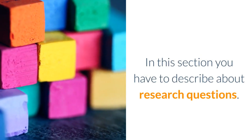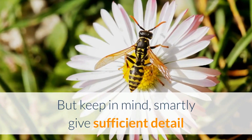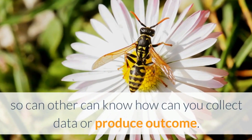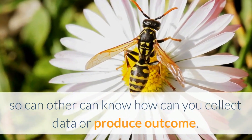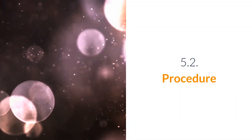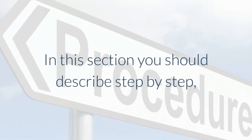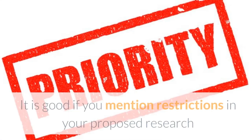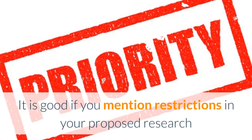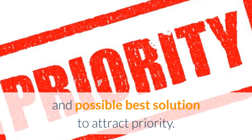Section 5.1 — Materials and Methods: describe your research questions, and give sufficient details so others can understand how you will collect data or produce outcomes. Section 5.2 — Procedure: describe step by step how you will obtain the proposed results. It is good to mention restrictions in your proposed research and the possible best solutions to address them.